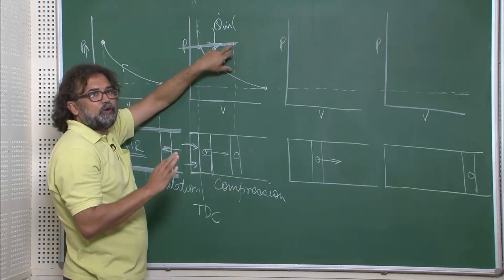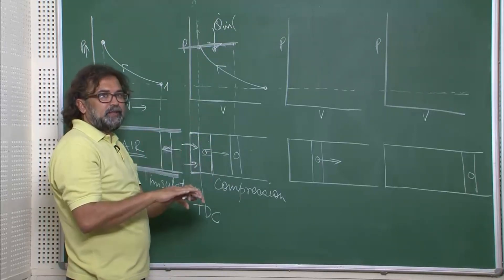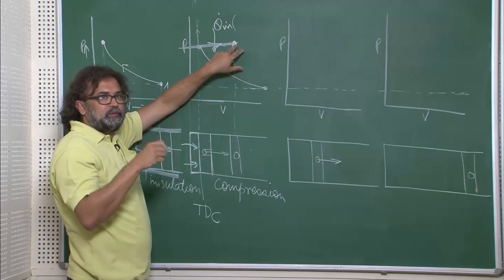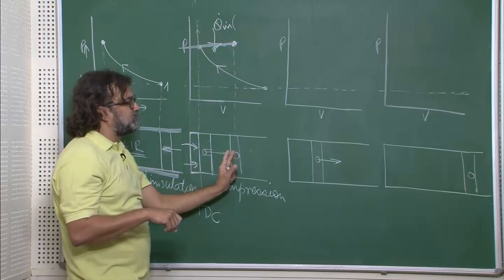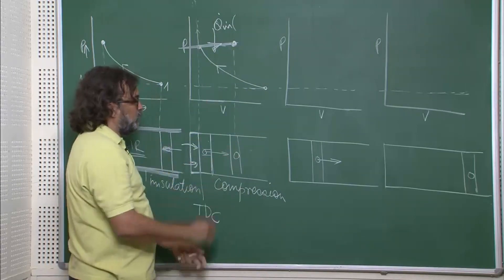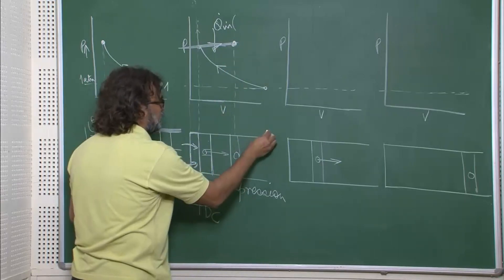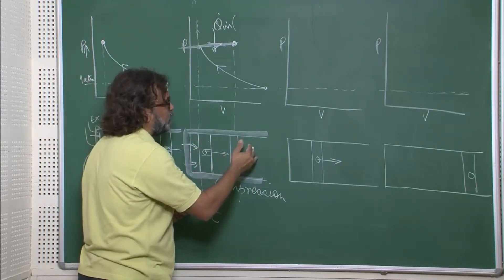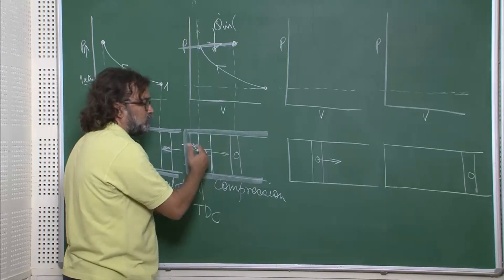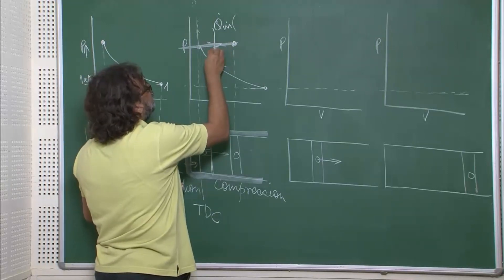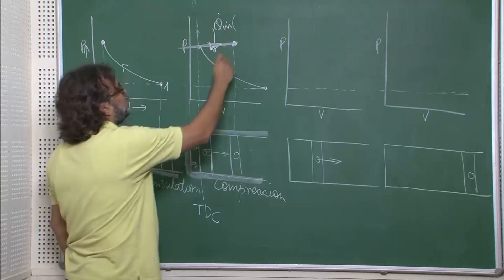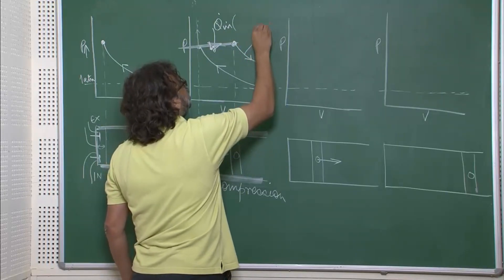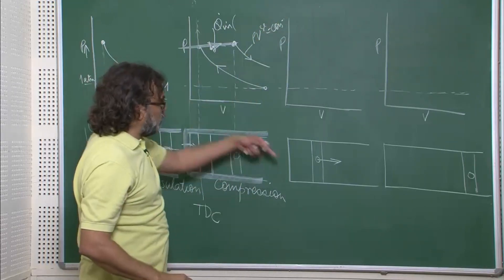Whatever further expansion takes place, there is no heat addition anymore — whatever heat was supposed to come in has already come in and all the diesel has been injected and burnt. From this point onwards, no enthalpy is added to the system. As expansion continues the pressure and temperature go down. The insulation is still intact; heat came in as the piston went backward, and now further expansion is adiabatic — PV to the power gamma equals constant.